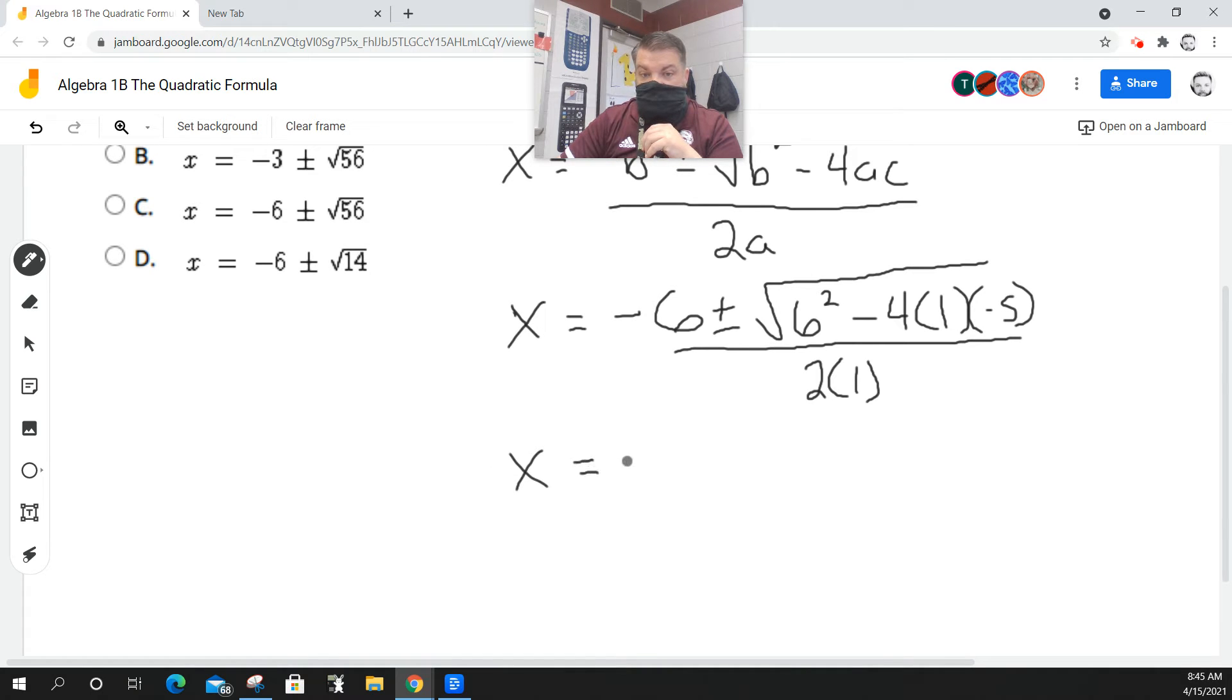Next line. X is equal to negative six plus or minus the square root of, what's six squared? 36. Now, this is important. I need to multiply negative four times one times negative five. What's that equal? Positive 20. All over two times one, which is two.